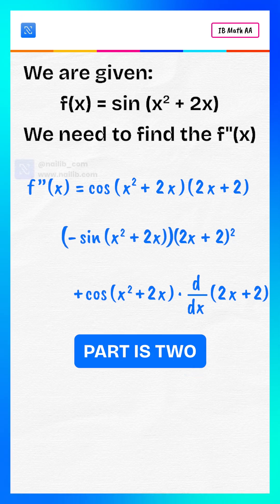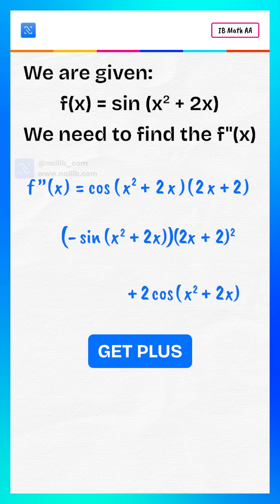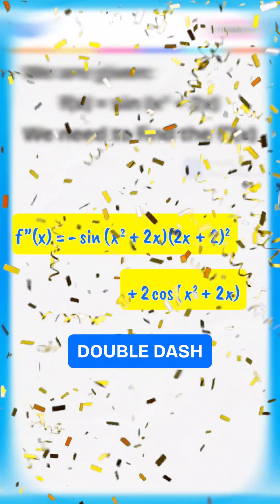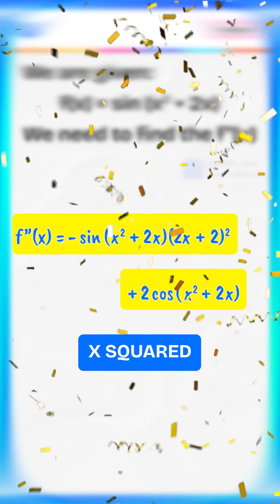And derivative of second part is 2. So we get plus 2, multiply by cosine of x squared plus 2x.